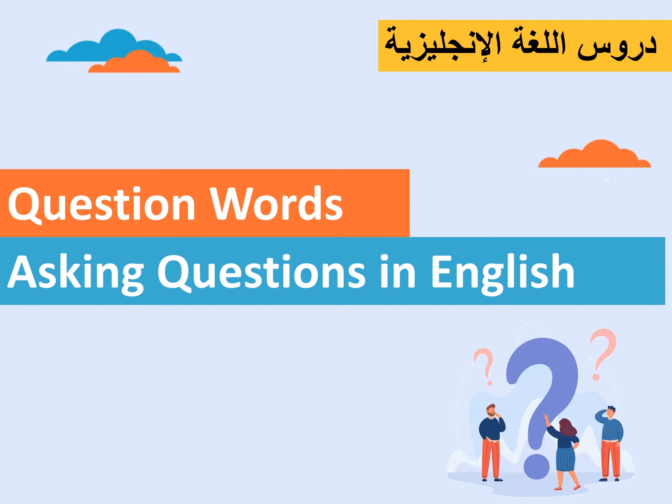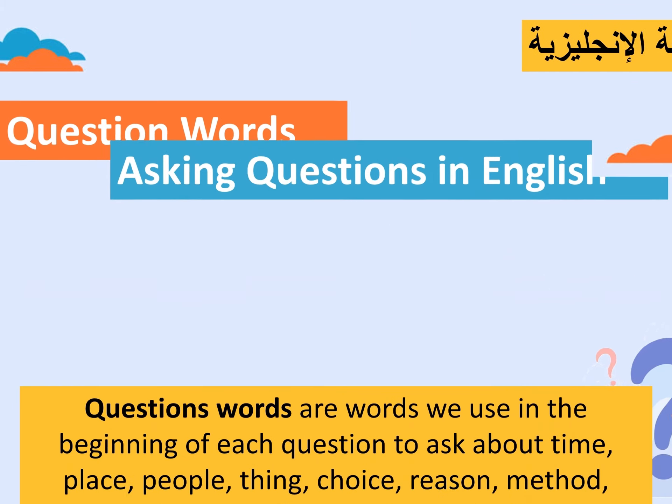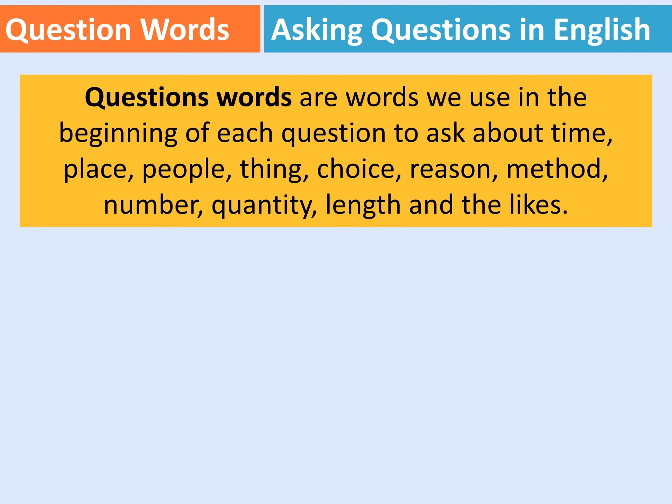So let us get started. First, we start with the definition: question words are words that we use at the beginning of each question to ask about time, place, people, thing, choice, reason, method, number, quantity, and the likes. أي أدوات الاستفهام هي كلمات نستعملها في بداية السؤال وذلك لنسأل عن معلومات مرتبطة بالمكان، الزمان، الشخص، الاختيار، السبب، طريقة فعل شيء ما، عدد شيء ما، كمية شيء ما، وإلى آخره.